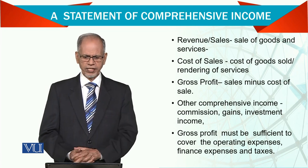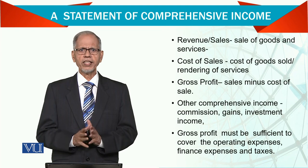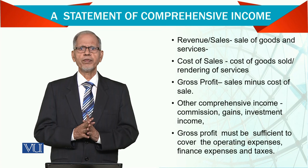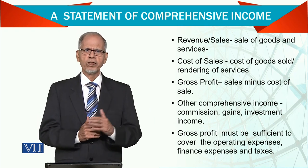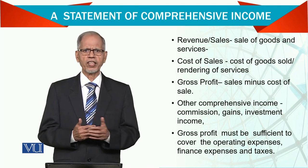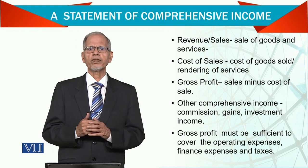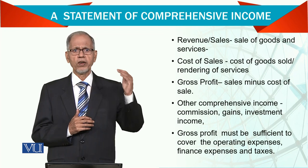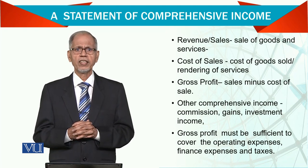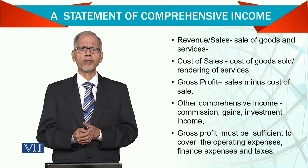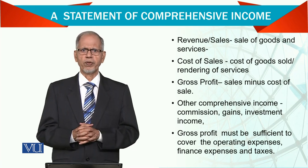Cost of sale is cost of goods sold and rendering of services. The difference — revenue minus cost of goods sold — gives us gross profit. In a trading business, we simply take opening stock plus purchases minus closing stock to get cost of goods sold. But in a manufacturing company, first you need to prepare the cost of goods manufactured, then adjust that with opening and closing finished goods to find the cost. I am sure you have already discussed this in your previous courses.